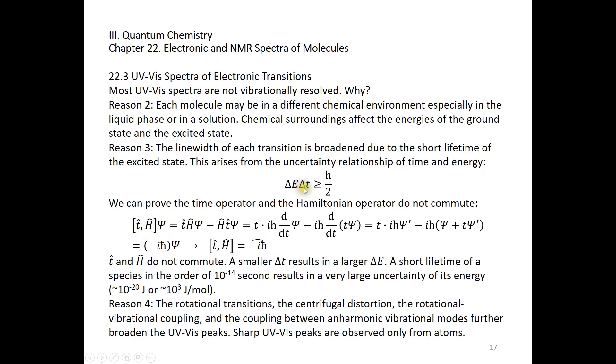And within a very small time period, we will have a larger uncertainty associated with energy. A short lifetime of a species in the order of 10^-14 seconds results in a very large uncertainty of its energy. So you can just use ℏ/2 divided by this time period. And roughly we have an estimate of the uncertainty of the energy, which can be as large as 10^-20 joule or 1000 joule per mole.